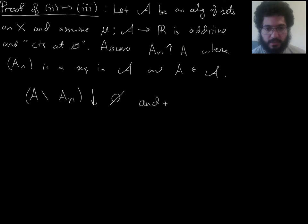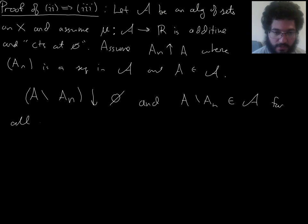And let's just point out that this is, when you take these complements, this is a sequence of things in fancy A, because fancy A is an algebra of sets, so it's closed under complements like this. So, this is true for all n.